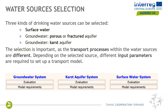This selection is important since the transport processes, as well as some of the chemical properties of the contaminants — in particular degradation — can be different depending on the system considered. Therefore, depending on the selected source, different input parameters are required to set up a transport model, and different chemical properties are considered in the first phase of ModProcon.